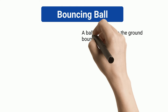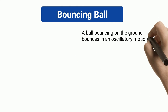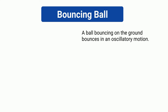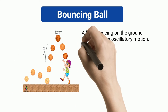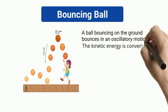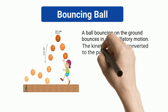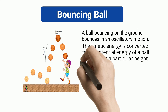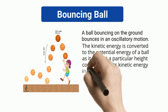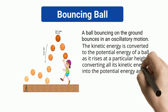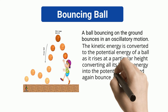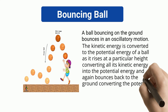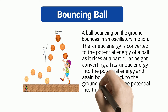Bouncing Ball. A ball bouncing on the ground moves in an oscillatory motion. The kinetic energy is converted to the potential energy of the ball as it rises to a particular height, converting all its kinetic energy into potential energy, and again bounces back to the ground converting the potential back into kinetic energy.